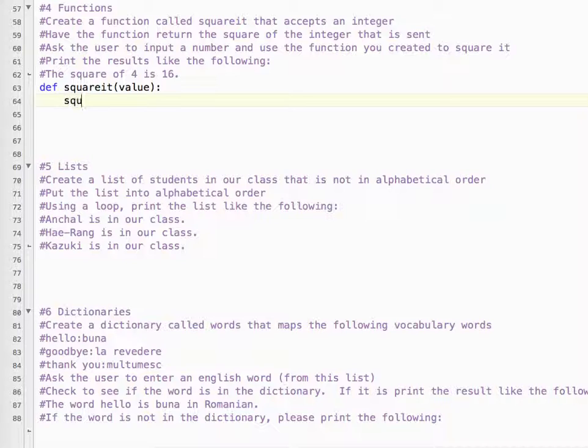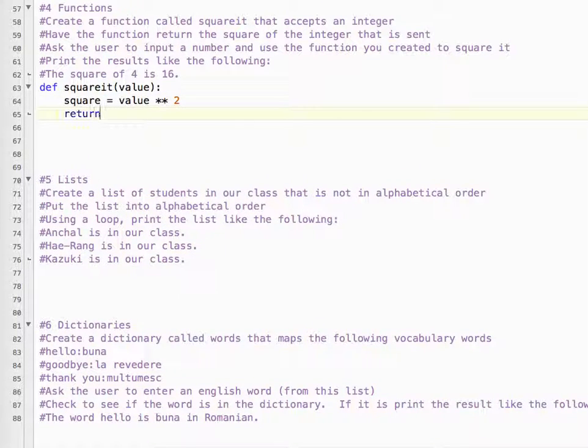Okay, so we need to calculate the square. So square equals value to the power of 2. That's how we do that in Python. That's to the power of. You can do it with the math module as well. And we need to return the square.